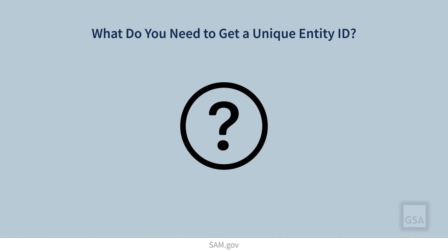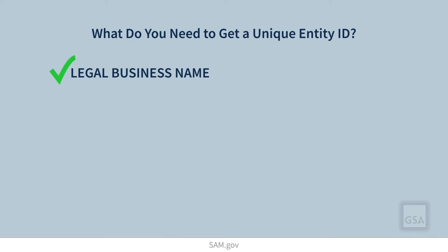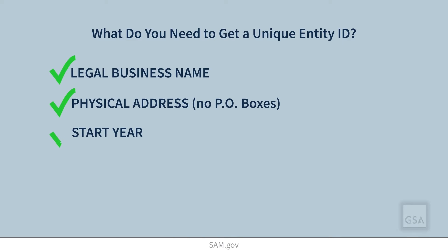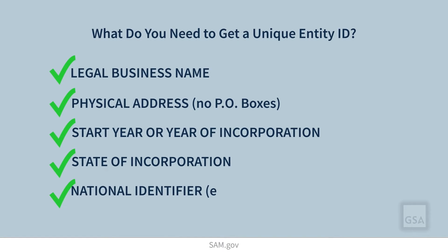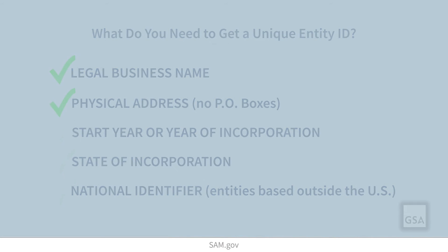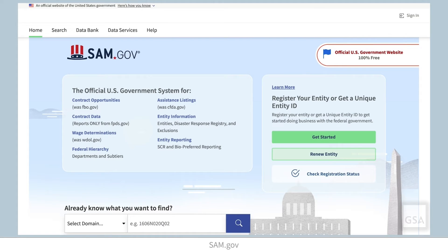Let's walk you through the steps to request a Unique Entity ID. Before we begin, make sure that you can officially document your entity's legal business name, physical address, start year or year of incorporation, state of incorporation, and your national identifier if your entity is based outside of the United States. You also need to set up a SAM.gov user account.